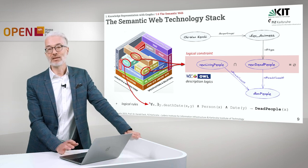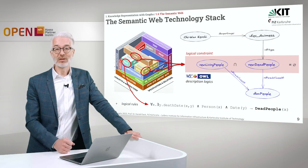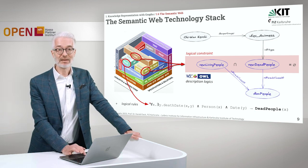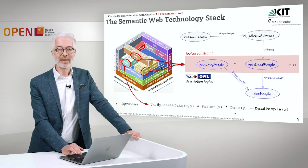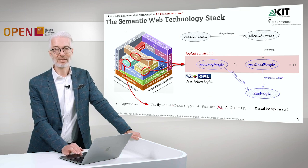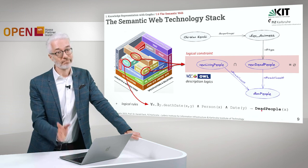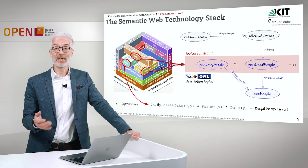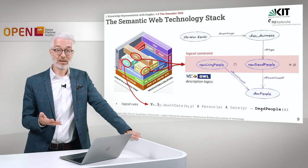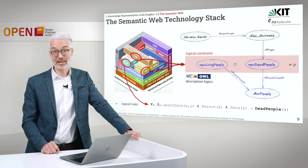With the help of rules, which also belong to logic, you can state something that defines what dead people are. Given here in terms of first-order logic: for all individuals X, there exists an individual Y, such that death date of X and Y holds — when X is a person and Y is a date. If there is a death date of person X and date Y, then X belongs to the class of dead people. This is a logical rule which defines the properties of people who are dead.